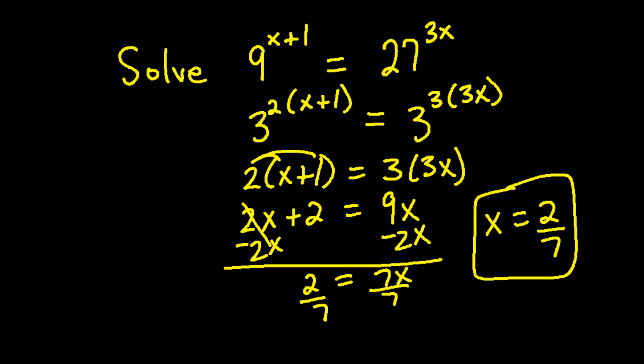It's best to always check your answers. We can substitute x equals 2 sevenths into the equation to check this. 9 to the power 2 sevenths plus 1 is approximately equal to 16.86 in a calculator. Now let's try 27 to the 3 times 2 sevenths by substituting 2 sevenths into the exponent here. This is also equal to 16.86 approximately in a calculator so we know our answer is correct.